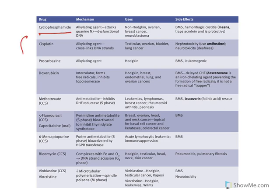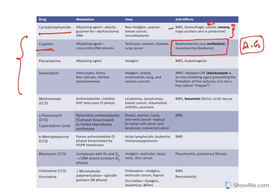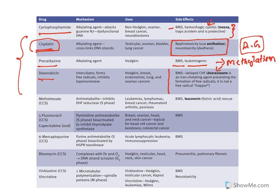Key points summary: Cyclophosphamide causes bone marrow suppression and hemorrhagic cystitis, which can be treated by mesna. Cisplatin has the highest amount of nephrotoxicity and neurotoxicity — similar to aminoglycosides. Procarbazine causes bone marrow suppression and is leukemogenic; it is a methylating agent that methylates DNA, which may cause mutagenesis and carcinogenesis. Doxorubicin causes cardiotoxicity, which can be treated by dexrazoxane.